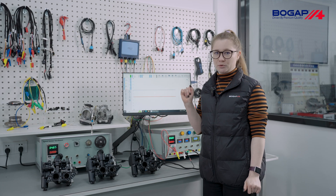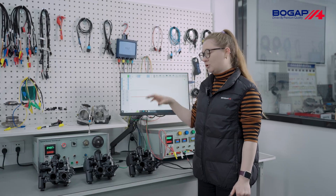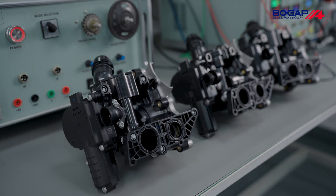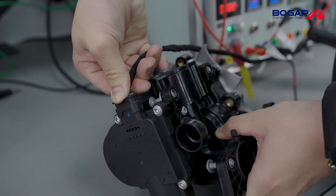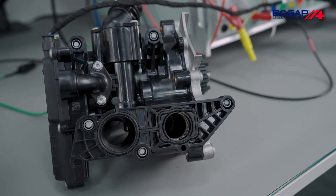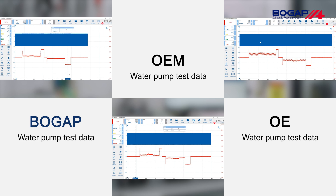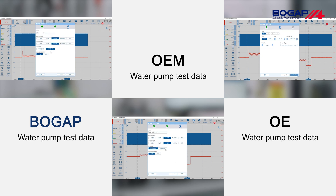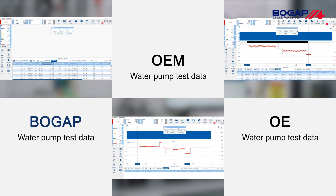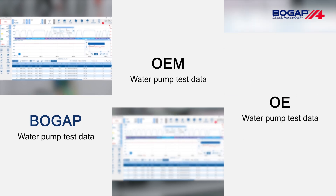Here we have our equipment that we are going to use for checking our water pumps. This is a Pico brand signal generator that will receive the signal from the water pump flap and transmit it to our screen as a waveform graph. According to the test results, our latest version of the BOGAP water pump is basically consistent with the original OE products in terms of product appearance, product performance, reaction rate of the electronic thermostat, and other parameters.